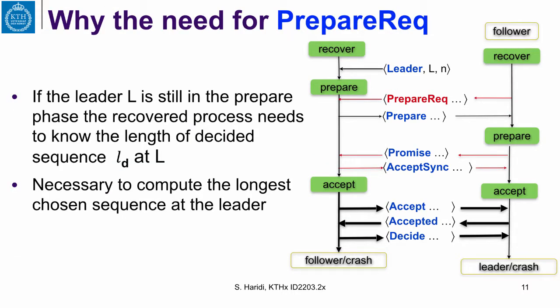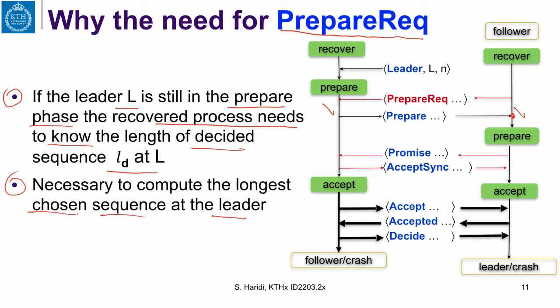Why do we need a prepared request? Why not allow a follower to just send a promise immediately? The main reason is: if the leader L is still in the prepared phase, the recovered process needs to know the length of the decided sequence at L, because the leader has to form the longest chosen sequence. Moreover, if the leader is still in the prepared phase, it still needs promises from a majority before it can proceed — otherwise it is stuck. So the leader needs to send a prepared message to the follower so the follower can send a promise. That is all — the only change is to request a prepared message; the rest of the algorithm is exactly the same.